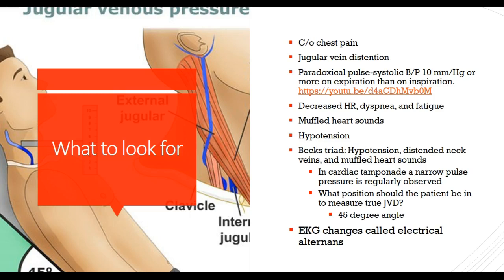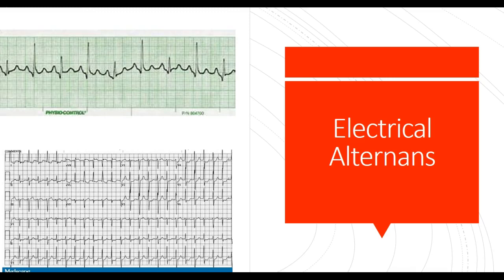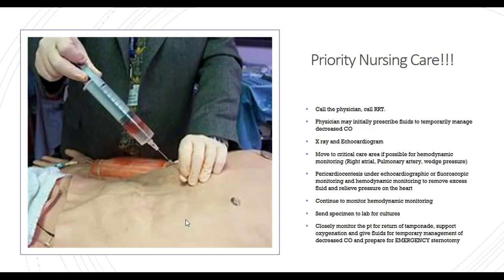EKG changes called electrical alternans are seen in cardiac tamponade. On the strip, you can see a sinus rhythm with discernible P waves followed by QRS complexes with a normal PR interval, all marching out the same. However, you notice one tall peaked QRS less than 0.12 seconds, and then another that's about one-third its size, alternating — tall, then small, then tall again. This alternating pattern is electrical alternans, typically seen in cardiac tamponade. A 12-lead EKG will show the same pattern.